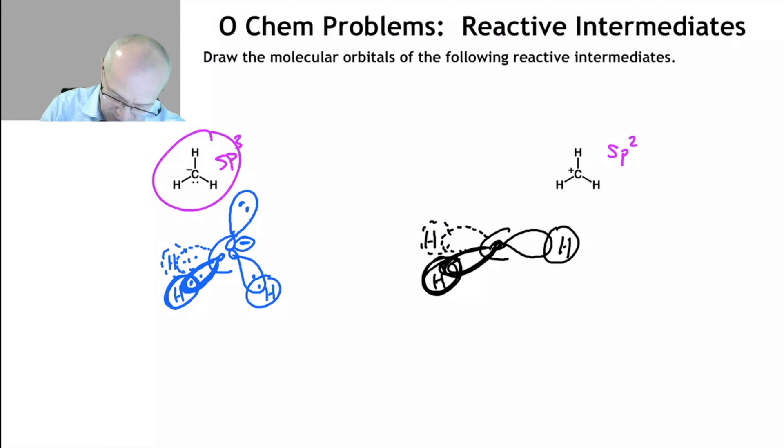And now because it's sp2, it has an empty or unoccupied p orbital right there. And these are, of course, positive. There you go. So now here's sp2, sp2, sp2, and here is an empty or unoccupied p orbital of a carbocation.